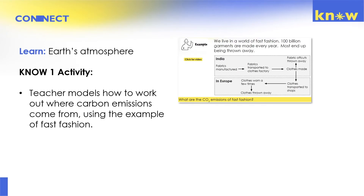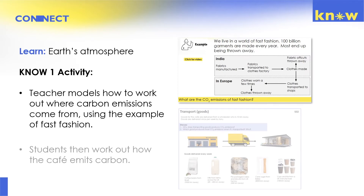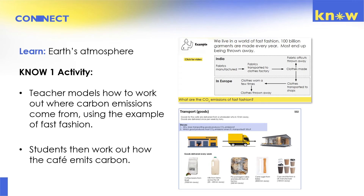Back at school, the first Know activity is about applying what students have learned about Earth's atmosphere. The teacher models how to work out where carbon emissions come from in industry, using the example of fast fashion. Students then apply what they've learned to work out how the cafe emits carbon — looking at transport of staff, transport of goods, and how they dispose of waste.